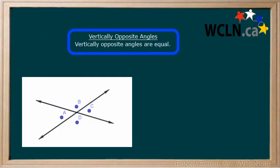Another important point about vertically opposite angles is that they are equal. In this example, our vertically opposite angles are A and C and D and B.